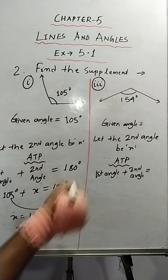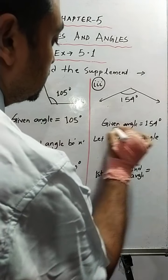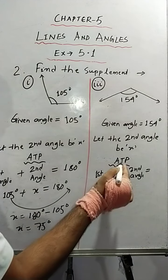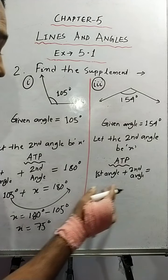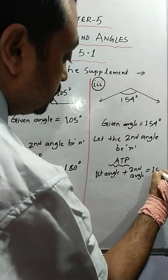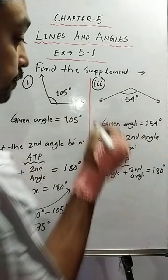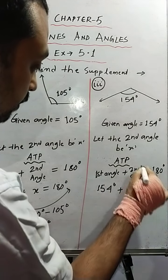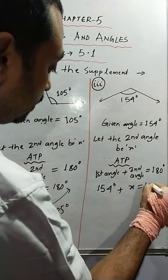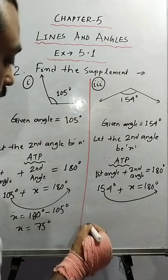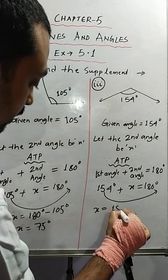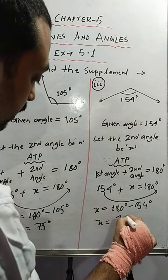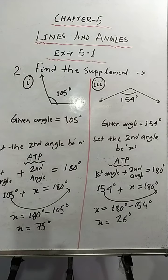Similarly, for sum number 3 the given angle is 154 degrees. We consider this as the first angle. We are not aware of the second angle. So we write: first angle plus second angle equals 180 degrees. In place of the first angle we write 154 degrees and the second angle we consider as x, giving us 154 plus x equals 180.